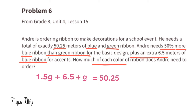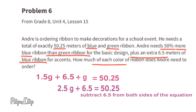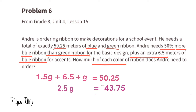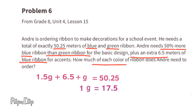Collecting like terms: 1.5g plus g — since g equals 1g — gives 2.5g. The equation becomes 2.5g plus 6.5 equals 50.25. Subtracting 6.5 from both sides gives 2.5g equals 43.75. Dividing both sides by 2.5, we find that g equals 17.5 meters of green ribbon.